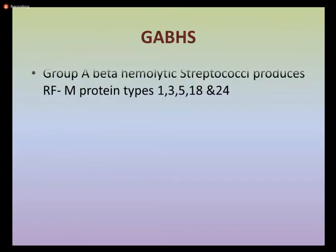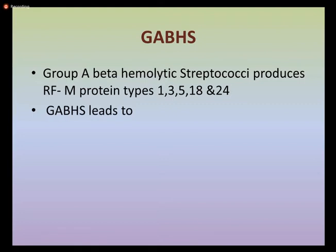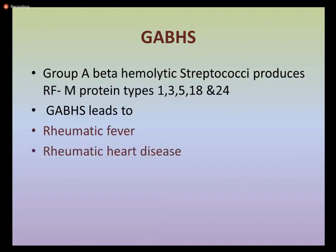The main etiology involves GABHS — group A beta-hemolytic streptococcal — which produces rheumatic fever through M proteins. These M proteins are virulence factors produced by streptococcal and determine the group type. The types most commonly involved in the pathogenesis of rheumatic fever are types 1, 3, 5, 18, and 24. After streptococcal pharyngitis, GABHS can lead to rheumatic fever, rheumatic heart disease, and in lesser amounts, glomerulonephritis.